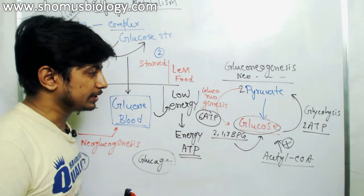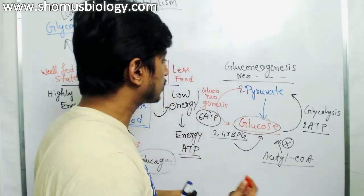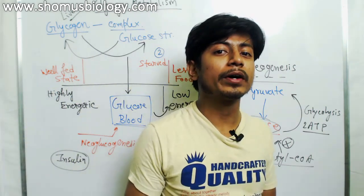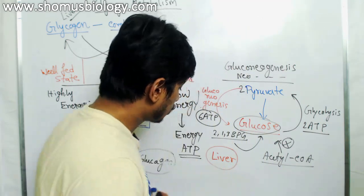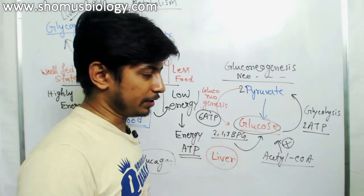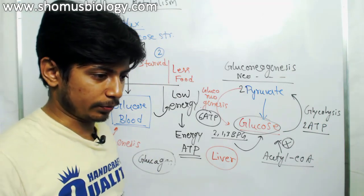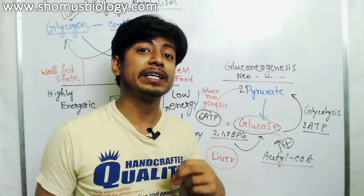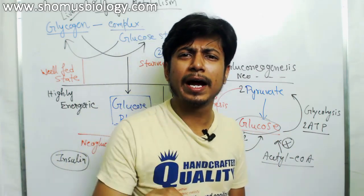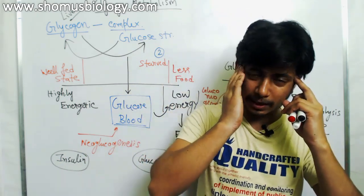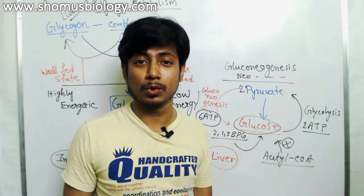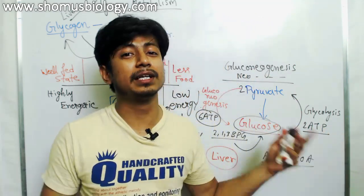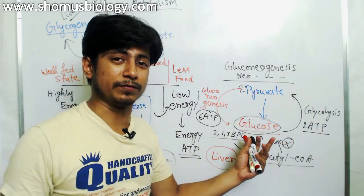Another important point about gluconeogenesis is where it occurs. It occurs mostly in the liver, and a very small amount in the cortex of our kidneys. There is no gluconeogenesis in muscle. Once glucose is produced in the liver it is stored, and this usually occurs in a low energy state — such as a low carbohydrate diet or extensive exercise. Specific types of cells in our body, particularly brain cells, rely only on glucose as a food source, so if there is no glucose, brain cells will not survive. This is another reason why the body invests energy to produce glucose.